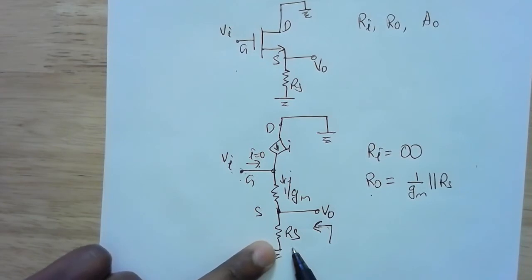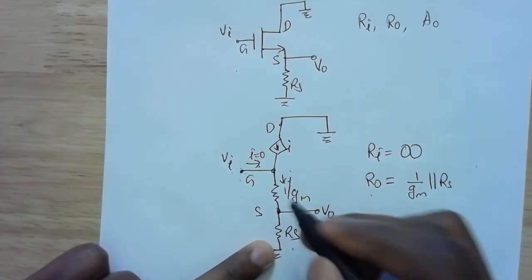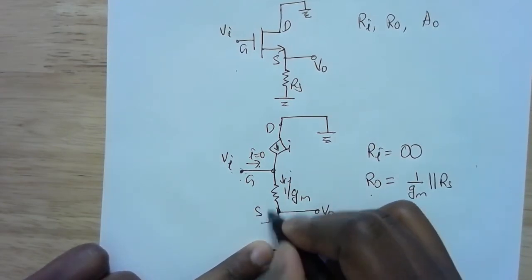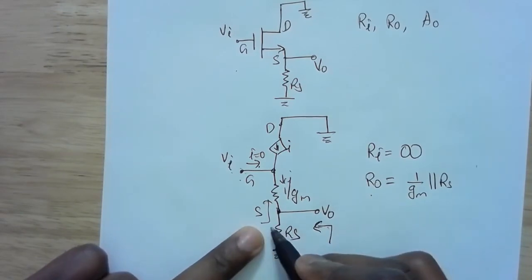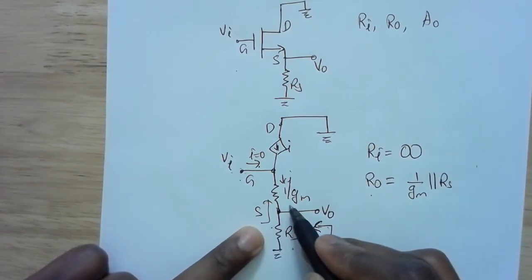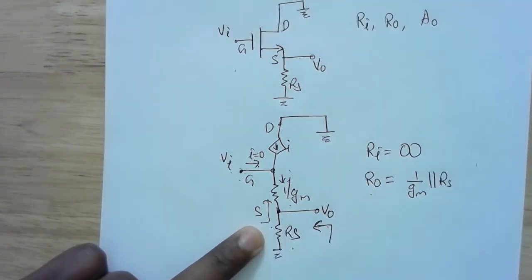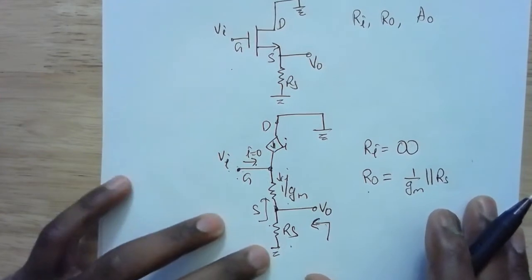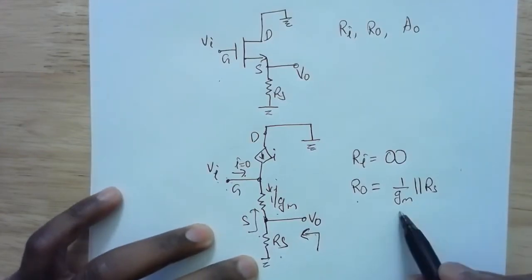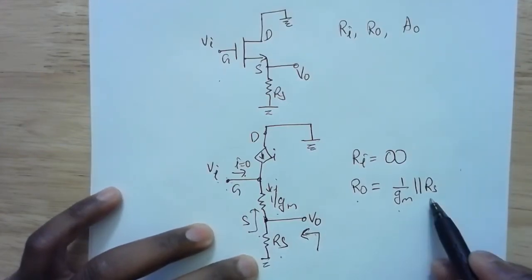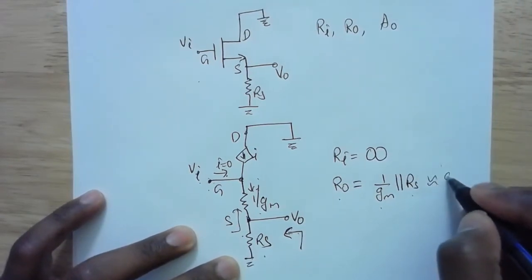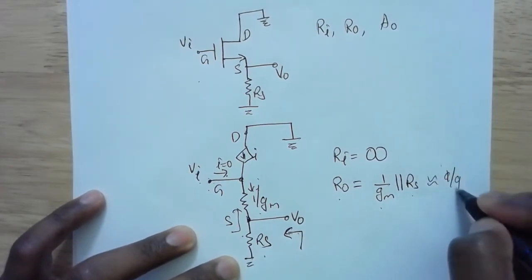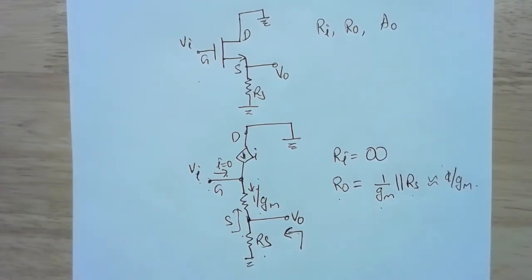Sometimes RS itself is considered part of the output, and in that case the output impedance looking in would just be 1/gm. On the other hand, since 1/gm is usually much smaller than RS, the parallel combination is approximately equal to 1/gm anyway.